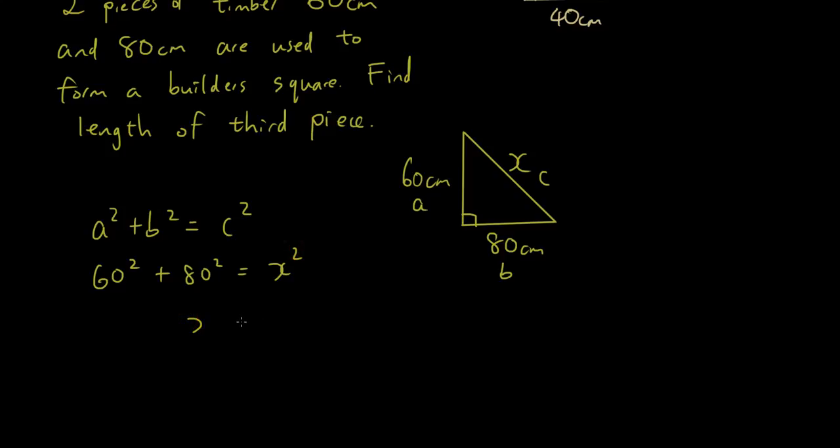Put 60 into where a is, put 80 where b is, and put x where c is. So to find x you would square root 60 squared plus 80 squared. Put all that in the square root because that's the opposite of squared, and put that in the calculator and you should get 100 centimeters.